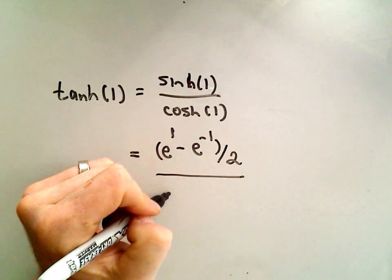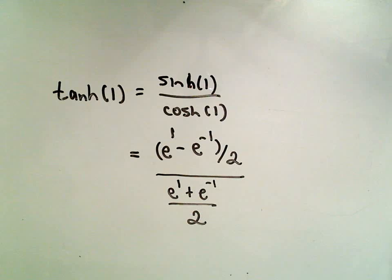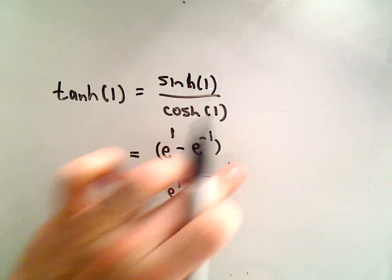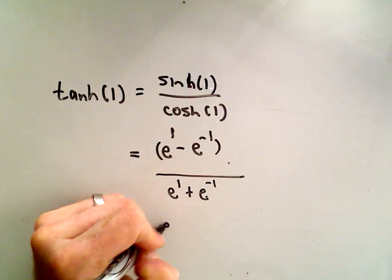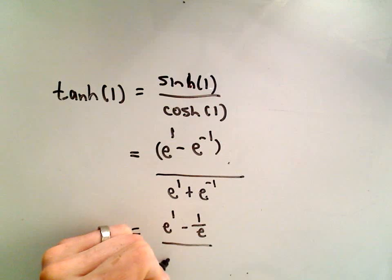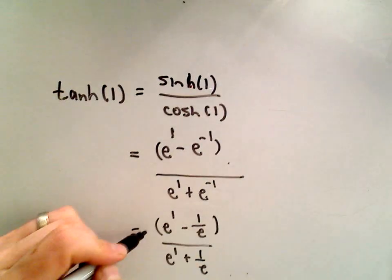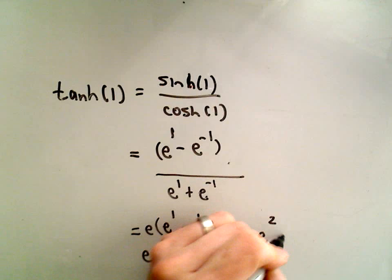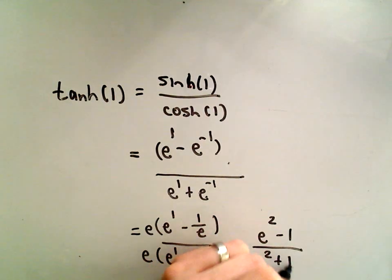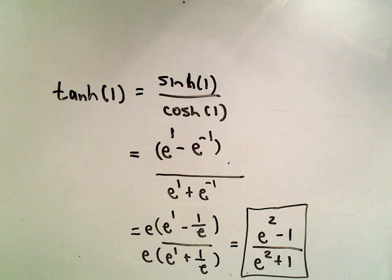For hyperbolic cosine, we'll just get e to the 1st plus e to the negative 1st, all divided by 2. So, a little tedious here. We can simplify by just canceling out the denominators. If you flip and multiply, those will cancel. And now you've just kind of got a tedious problem to solve. So this is e to the 1st minus 1 over e divided by e to the 1st plus 1 over e. I mean, obviously you could put this in a calculator. Maybe to simplify it, I would just multiply top and bottom by e. It looks like on top you would get e squared minus 1, and on the bottom we would get e squared plus 1. Again, you could plug this in a calculator, or if it was a test I was taking without a calculator, I would just leave it like that. So that's the value for hyperbolic tangent of 1.